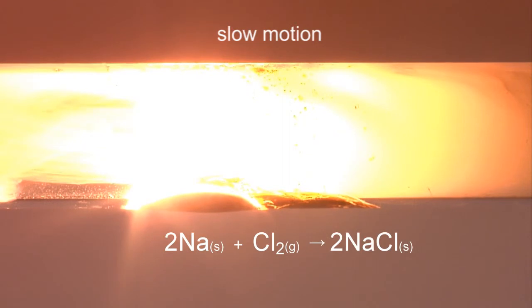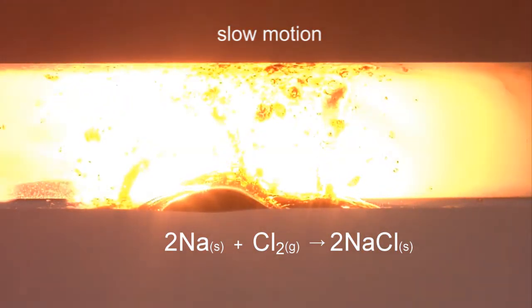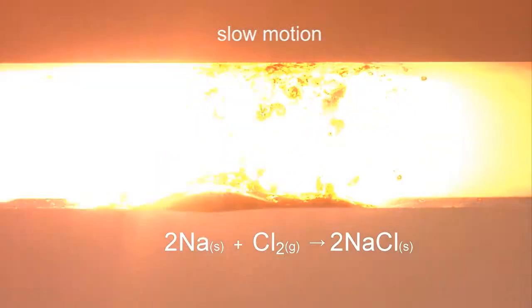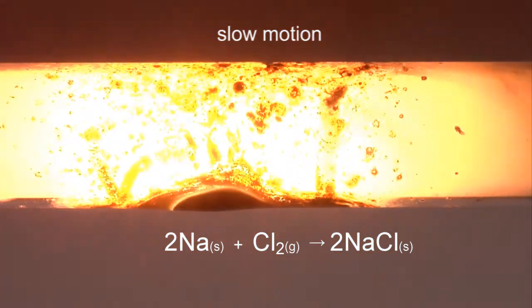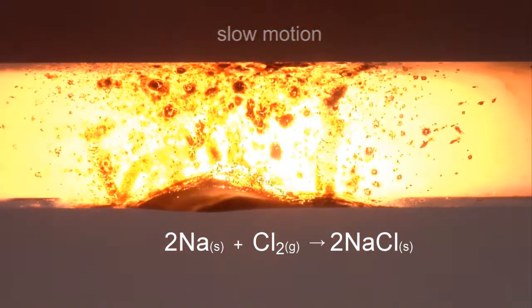This highly exothermic reaction produces enough energy for sodium to displace boron and silicon from the glass. The black material which contains boron and silicon is fused within the molten glass.